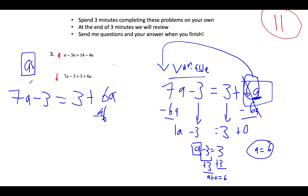For problem 3b, we have 7a minus 3 equals 3 plus 6a. We subtract 6a from both sides using inverse operations to eliminate 6a, turning it into 0. That gives us 7a minus 6a, which is 1a, minus 3 equals 3. So we have a minus 3 equals 3. To eliminate the minus 3, we add 3 to both sides, and we get that a equals 6.